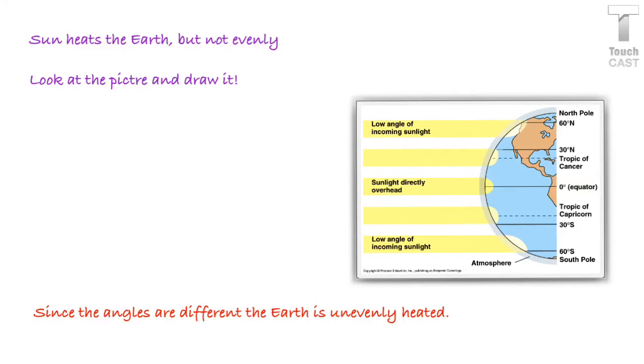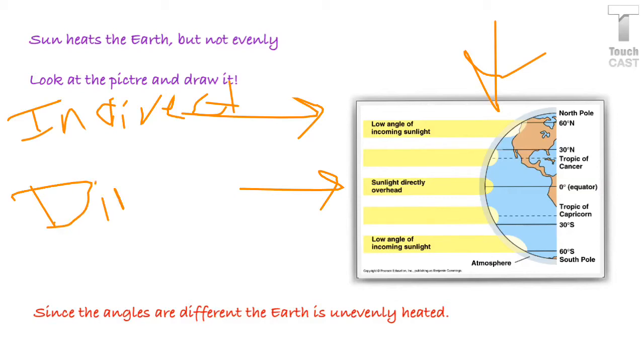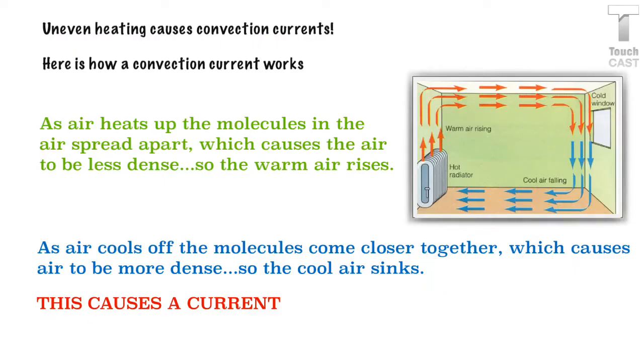So let's start out with a quick review. Remember that the sun heats the Earth, but it doesn't do it evenly. So take a look at this picture and draw it. The angles are different depending on where you are on the Earth. If you're at the poles, you have a more indirect angle. And if you're right there at the equator, you have a direct angle.